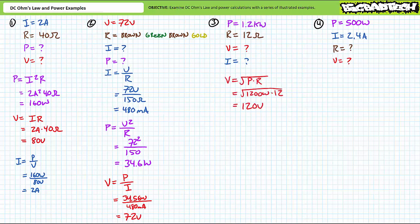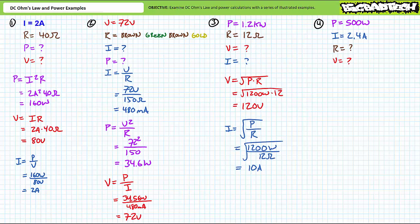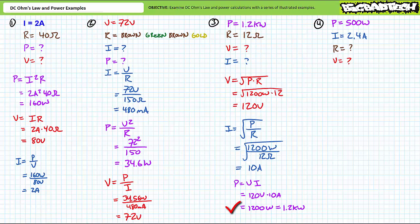Our third problem features a 12 ohm resistor known to be dissipating 1.2 kilowatts of power. We're being asked to solve for the voltage drop across it and the current through it. Voltage is equal to the square root of power times resistance. Substituting in our given values yields a voltage of 120 volts. Current is equal to the square root of power over resistance. Substituting in our given values yields 10 amps of current. A supporting calculation verifies these results, where power is equal to voltage times current. Substituting in our calculated values of 120 volts and 10 amps does indeed yield 1.2 kilowatts of power.